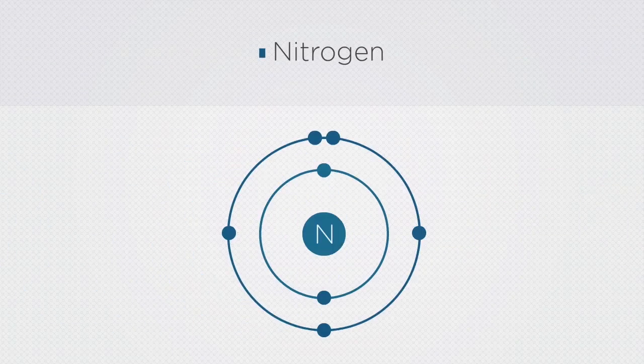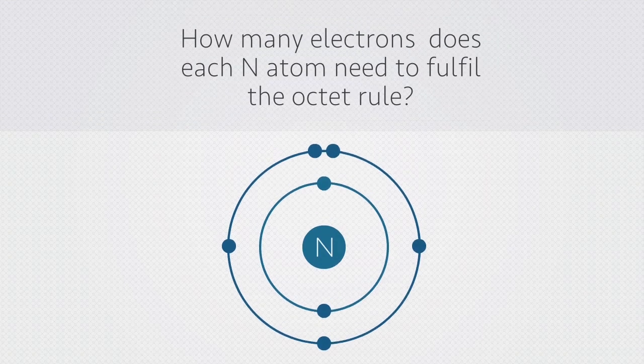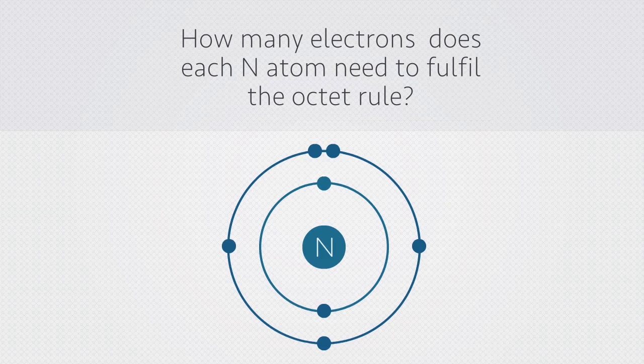Each of the nitrogen atoms has five electrons in their outer shells. How many electrons, therefore, do you think each will need to share to fulfill the octet rule?